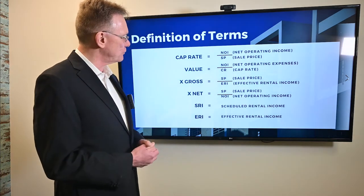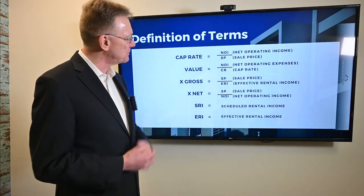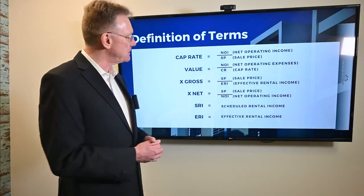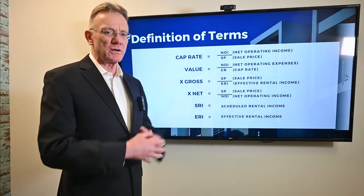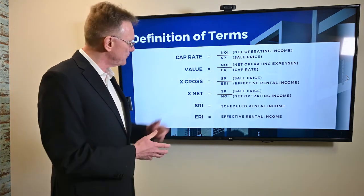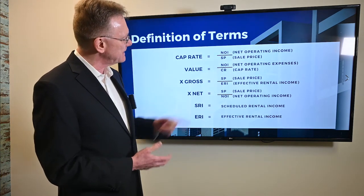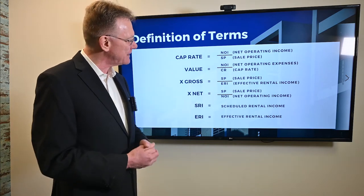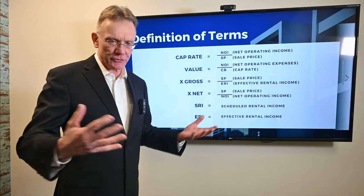Multiple times the gross and the net — those are very similar. For the gross multiple, you take the selling price of the property and divide it by your effective rental income. For the net multiple, you take the selling price and divide it by your net operating income, and that'll give you a number like 24, 25, or 30.